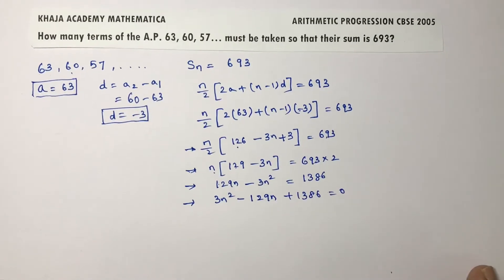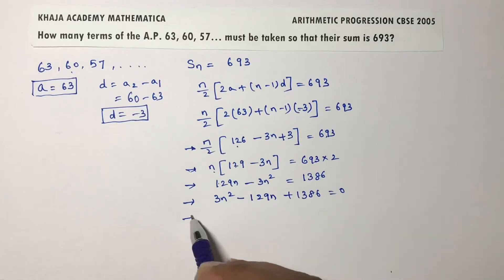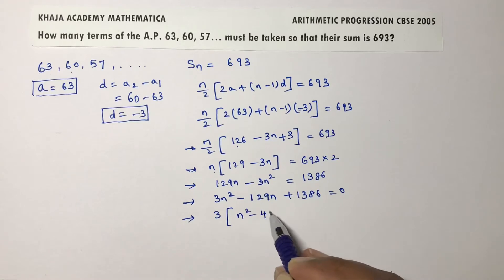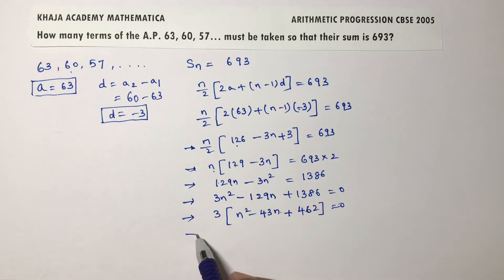Here you can take 3 common. If you take 3 common, n square minus 3 goes into 129, n square minus 43n, and 3 goes into 1386 which is 462. So 3 falls on the other side, 0 by 3 which is 0. You are left with the equation n square minus 43n plus 462 equals 0.